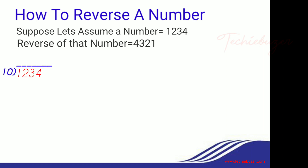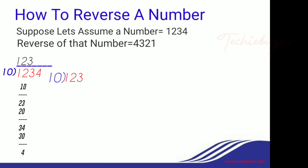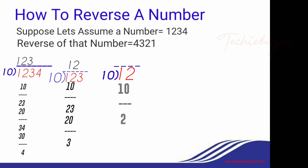If we divide 1234 by 10, the remainder will be 4 and the quotient will be 123. Again if we divide the quotient by 10, the remainder will be 3 and the quotient will be 12. Again dividing by 10, remainder is 2 and quotient is 1. One more time, remainder is 1 and quotient is 0. So the remainders we got are 4, 3, 2, 1 — the reverse of 1234 is 4321.